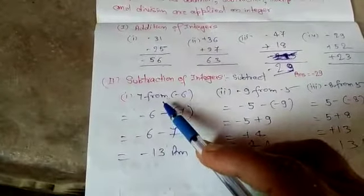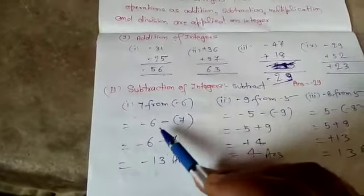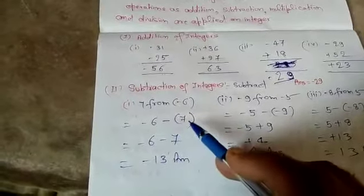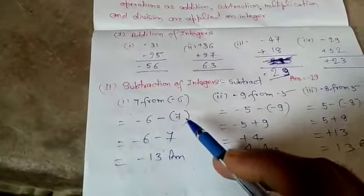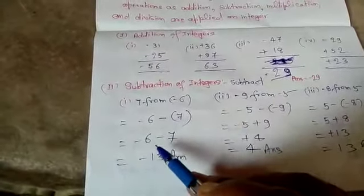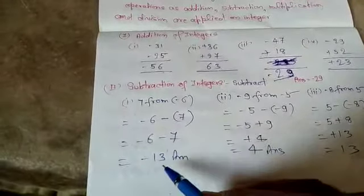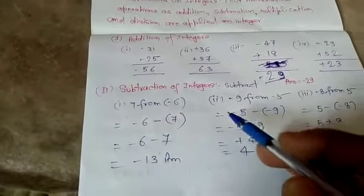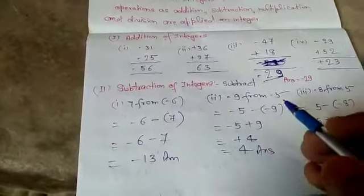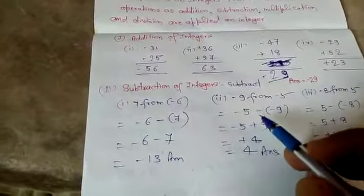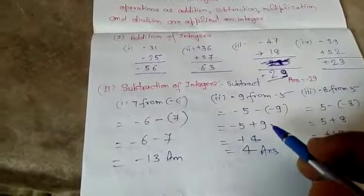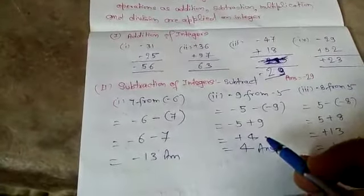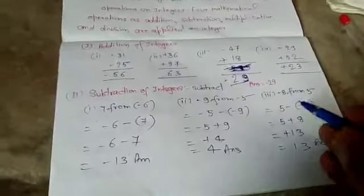Subtract 7 from minus 6. Then minus 6 minus 7. That is equal to minus 13. Second. Minus 9 from minus 5. Equal to minus 5 minus 9 equal to minus 5 plus 9. That is equal to plus 4.